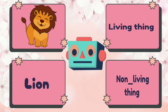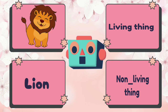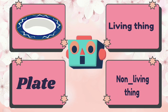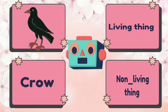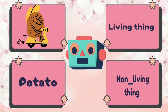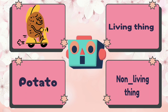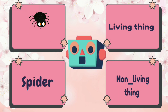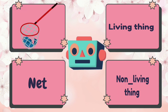Lion is living thing or non-living thing? Lion is living thing. Blade is living thing or non-living thing? Blade is non-living thing. Crow is living thing or non-living thing? Crow is living thing. Potato is living thing or non-living thing? Potato is non-living thing. Spider is living thing or non-living thing? Spider is living thing.